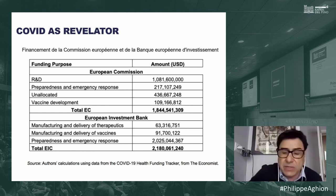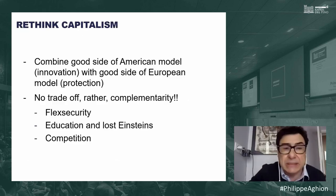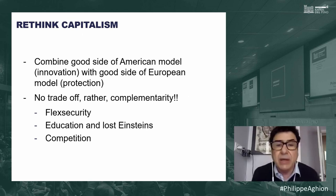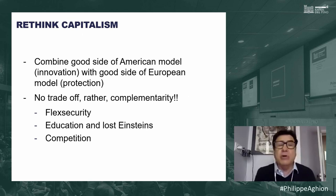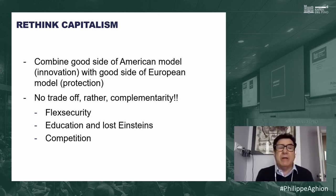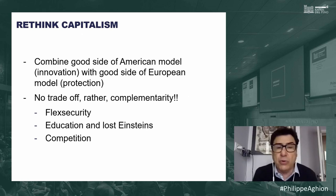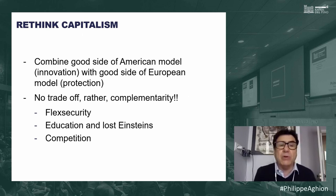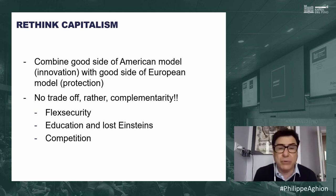What I would like is to combine the good side of the American model — innovation — with the good side of the European model — protection. Some believe you must sacrifice one for the other: if you choose innovation you must renounce protection and inclusion, or vice versa. But I want to mention three types of policies that can make you both more innovative and more protective and inclusive.